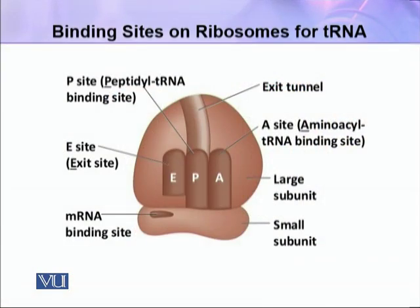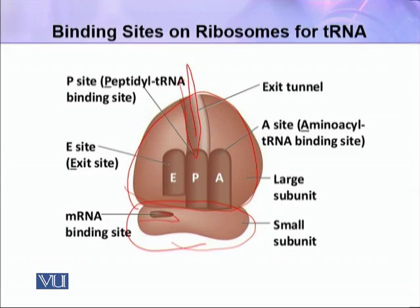یہ جو ہے structure ہے ایک ribosome کا۔ یہ اس کا smaller sub-unit ہے اور یہ اس کا larger sub-unit ہے۔ اس میں یہ tunnels ہیں — جیسے ایک یہ ہے اور ایک یہ ہے۔ اس میں جو ہے یہ A site ہے، یہ P site ہے اور یہ E site ہے۔